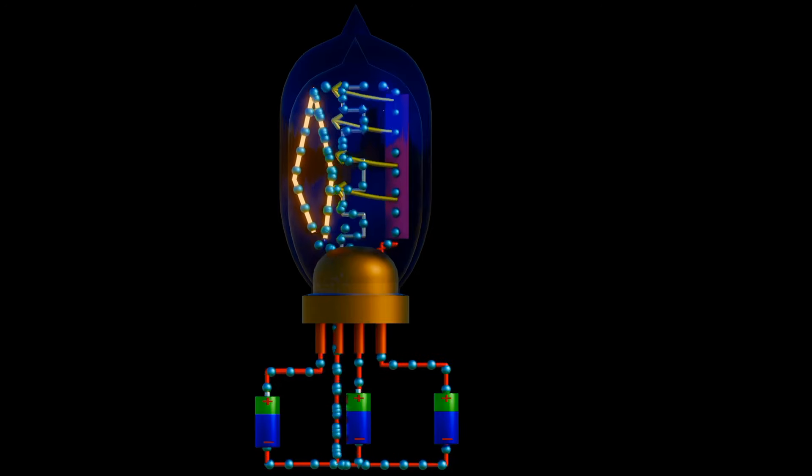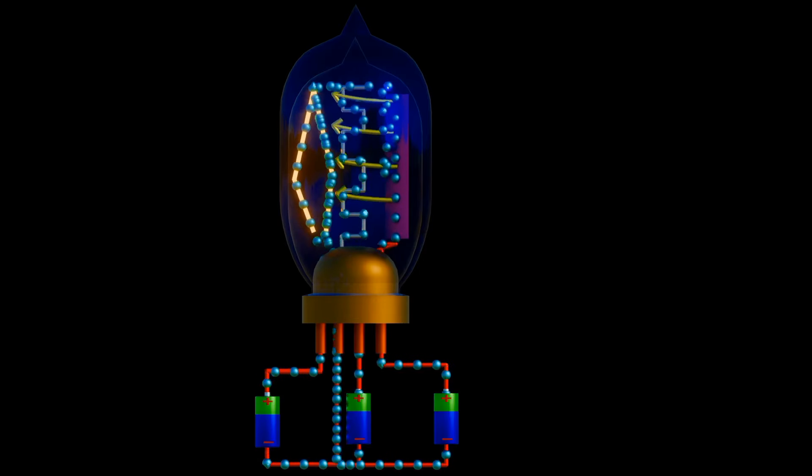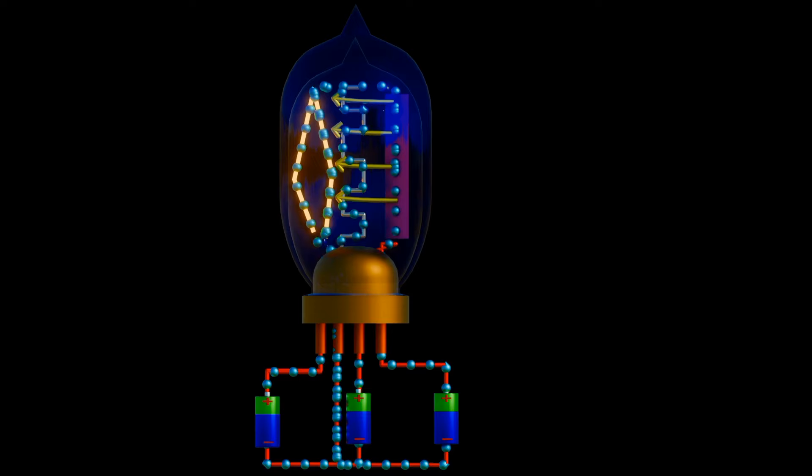If the grid is supplied with a positive potential battery, the electric field will be formed from the grid towards the plate. This enables the electrons emitted by filament to cross towards the plate, making this triode forward biased.